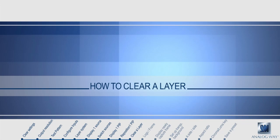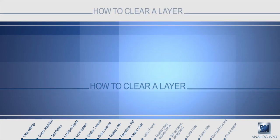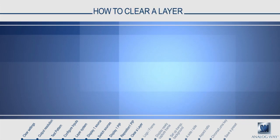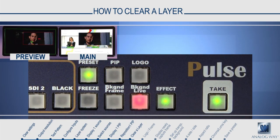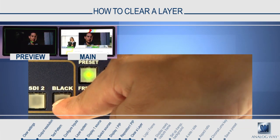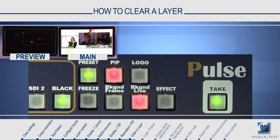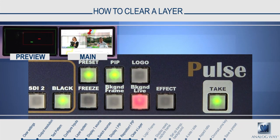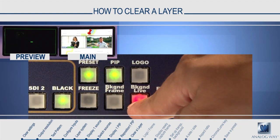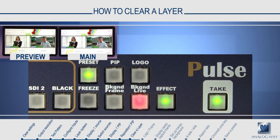How to clear a layer. To clear a layer, select the layer — you will see it begin to blink. Press black, and then take. Your layer will be cleared from the main screen. To see your other layer appear on preview, select a new layer.